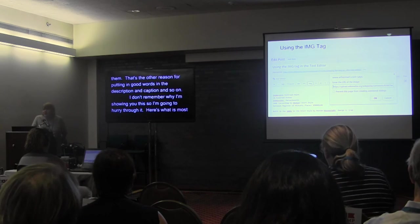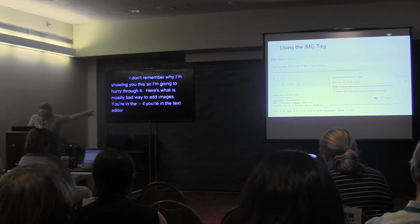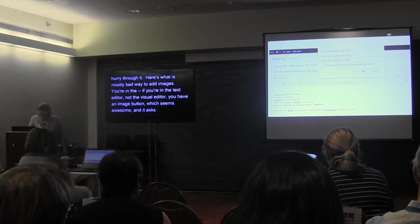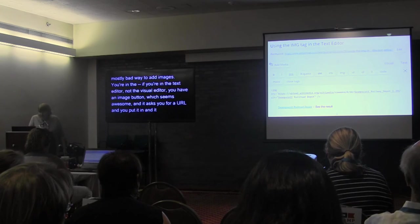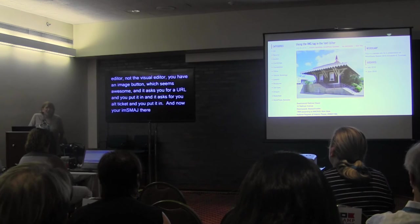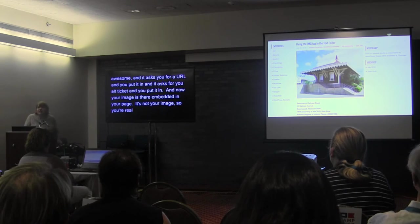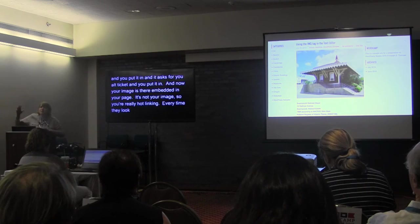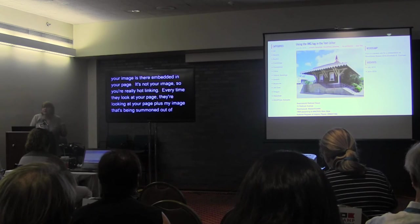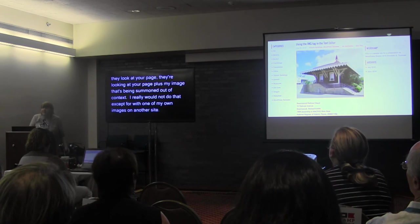Here's a mostly bad way to add images: if you're in the text editor rather than the visual editor, you have an image button. It seems like an awesome way — it asks for a URL, you put it in, it asks for alt text. Now your image is embedded in your page, but it's not necessarily your image. You're hot linking — every time somebody loads your page, they're summoning my image out of context. I really would not do that unless it's one of your own images on another site. Some photographers really hate hot linking and will track you down.